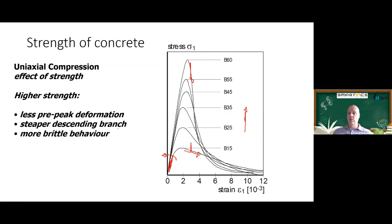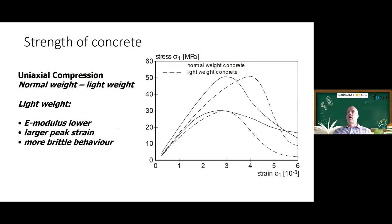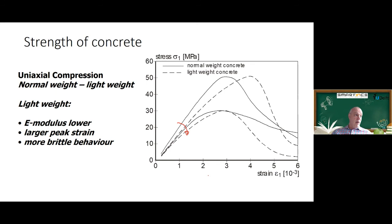This increased brittleness of high-strength concrete is important for self-healing: the cracks happen very suddenly and go straight through the material without the micro-cracking detours seen in normal strength concrete. Also, if you design self-healing capsules that are weaker than the aggregates, they may lower the overall stiffness and strength of the concrete, and could change the way the material cracks.